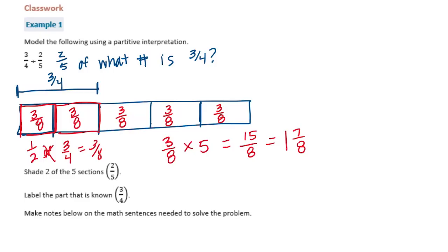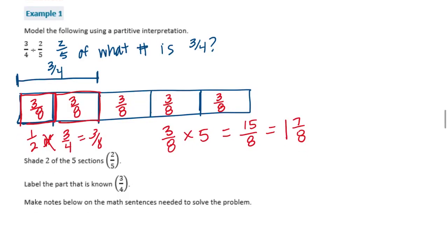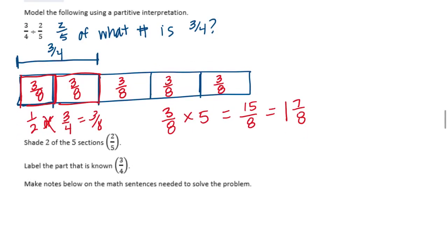So we shaded — or rather circled — the two sections representing two-fifths, and labeled the known part as three-fourths, and then we solved. Now we need to make notes on the math sentences needed to solve this problem, and connect the model to a new method we can use to quickly find the answer to division problems.